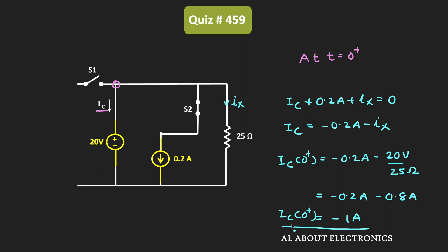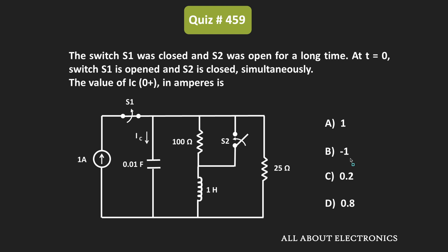We get the minus sign because the capacitor current is actually flowing in the opposite direction. In the question, the assumed direction of the current is downward, so as per that assumed direction, the capacitor current at t equals 0+ equals minus 1 ampere. From this, we can say that for the given question, option B is the correct answer.